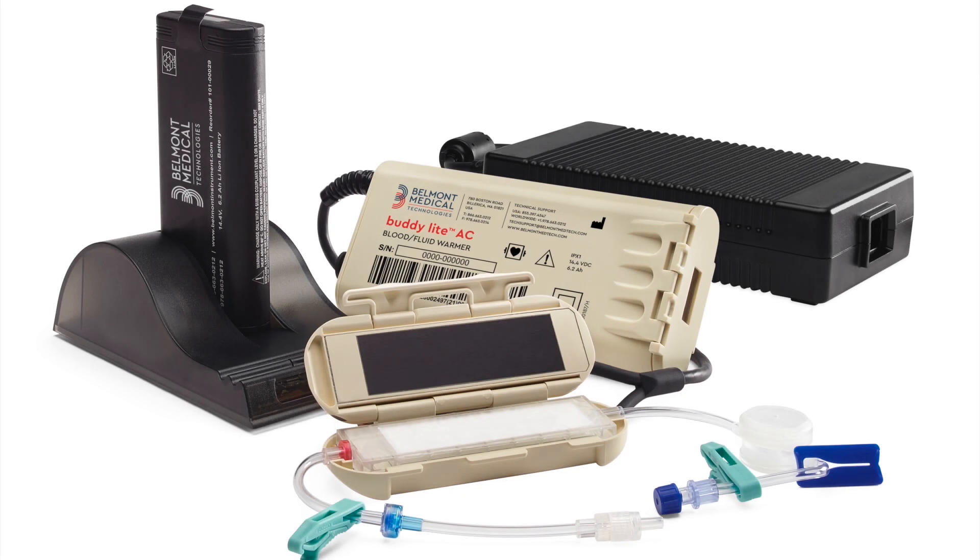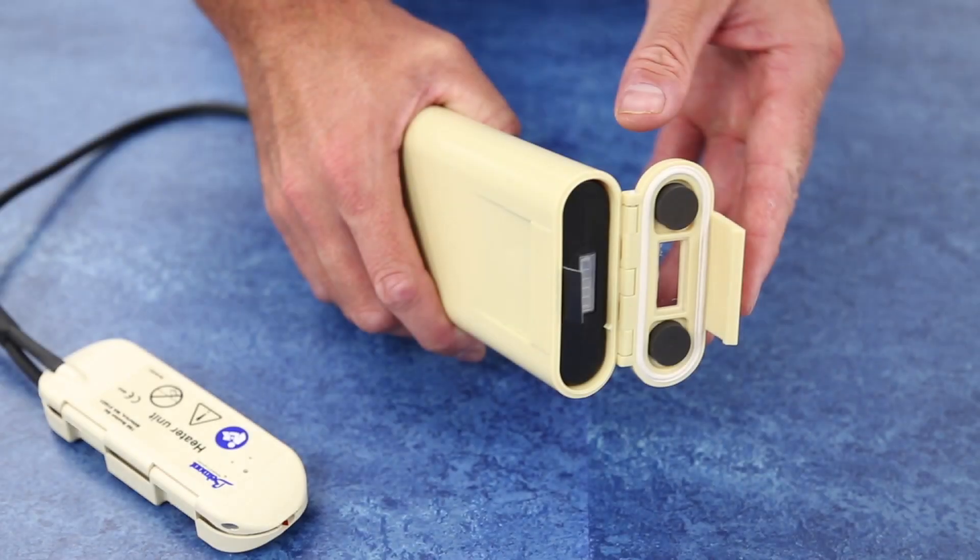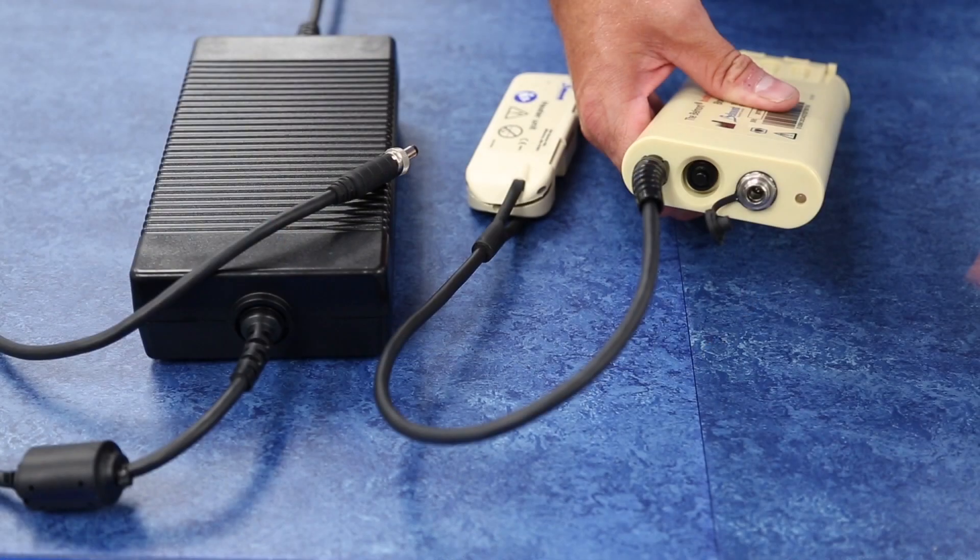The Buddy Light AC is designed for extended use of the system anywhere AC power is available. The internal battery is isolated from the AC power source, conserving battery power and protecting against overcharging. The system can easily switch from AC to battery power, eliminating any interruption in fluid administration.